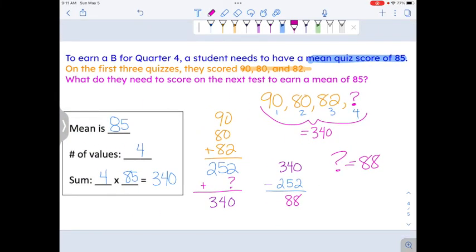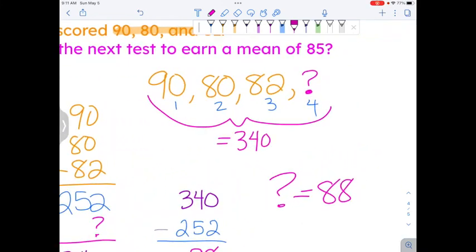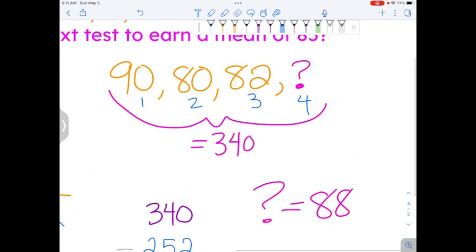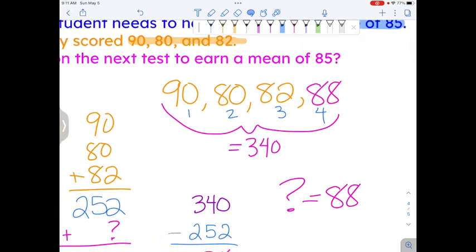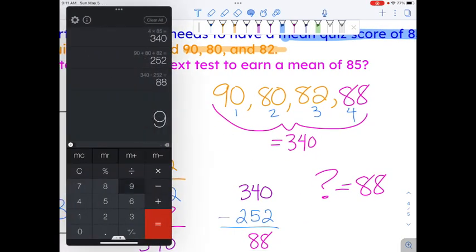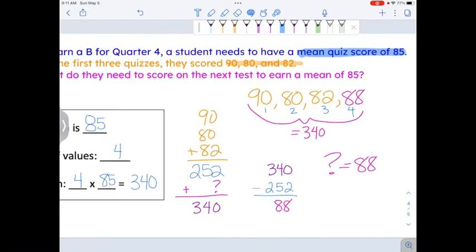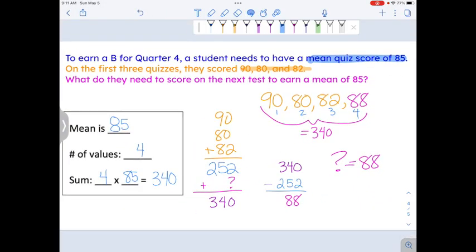To double check our work, we're going to add those numbers. 90, 80, 82, and now 88. Add them and divide by 4. 90 plus 80 plus 82 plus 88, divide by 4. There's the 85. This student knows that they can't really mess around. They really need to do all of their work and they really need to practice hard on the review day to earn an 88 and then they can get a B for this quarter. Good luck on your worksheet.